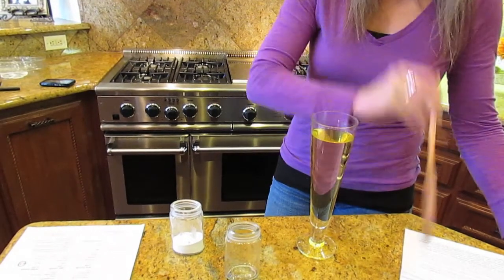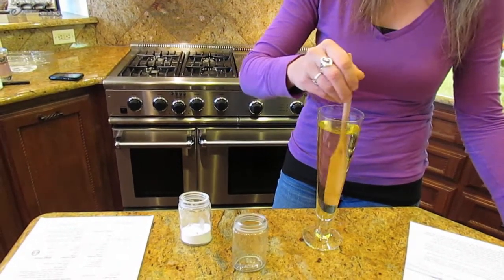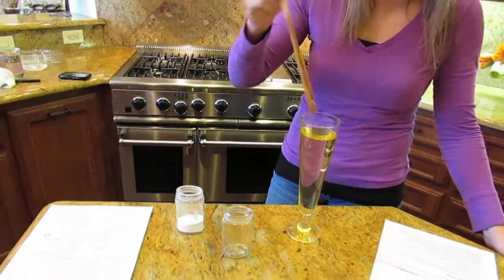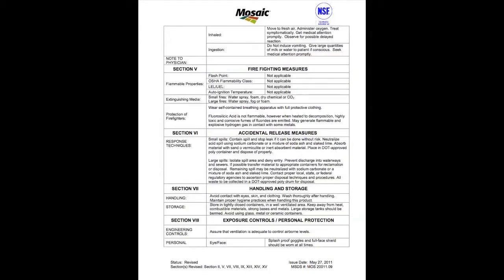According to the Department of Health and Human Services National Toxicology Program, the ingredients include radioactive materials or radionuclides such as uranium and radium. While uranium and radium found in fluorosilicic acid are known carcinogens, the decay rate products of uranium are even more dangerous and carcinogenic.